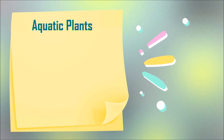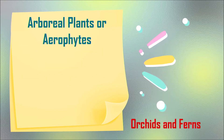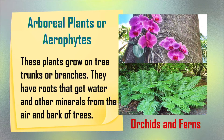Next, we have aquatic plants. These plants grow best in water. They have hollow and soft stems filled with air, so they are able to float on water. Another example is water lily. Next, we have arboreal plants, or aerophytes. These plants grow on tree trunks or branches. They have roots that get water and other minerals from the air and bark of trees. Examples are orchids and ferns.